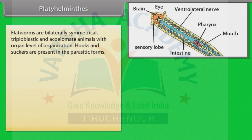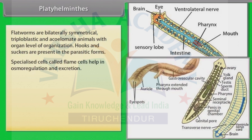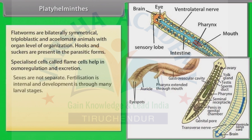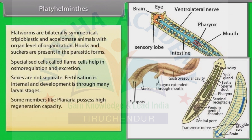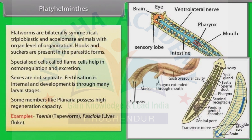Hooks and suckers are present in the parasitic forms. Specialized cells called flame cells help in osmoregulation and excretion. Sexes are not separate. Fertilization is internal and development is through many larval stages. Some members like Planaria possess high regeneration capacity. Examples: Taenia, that is tapeworm, and Fasciola, that is liver fluke.